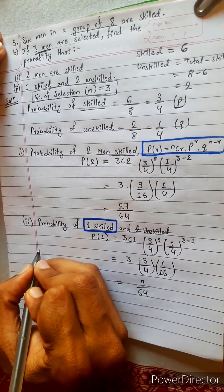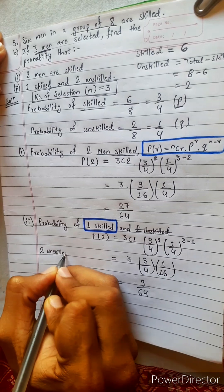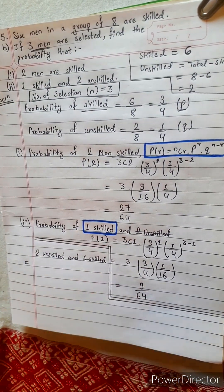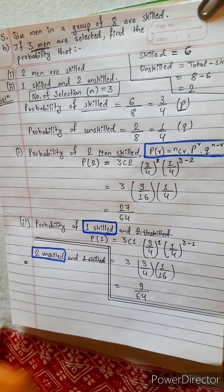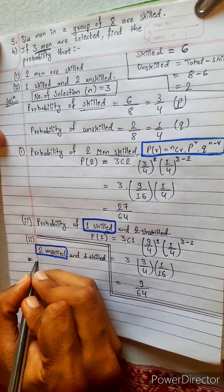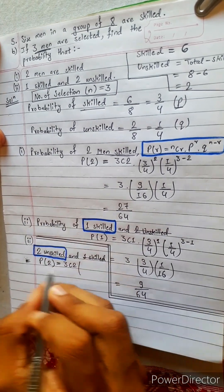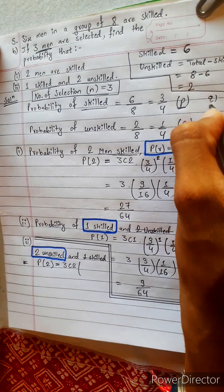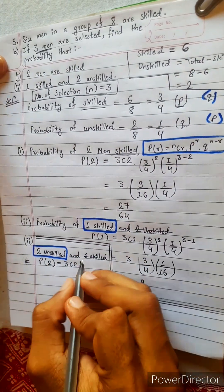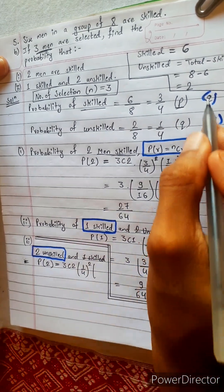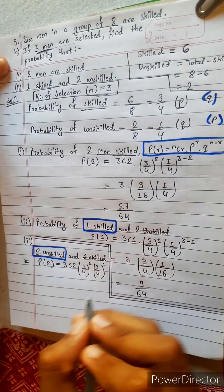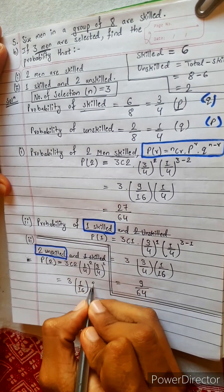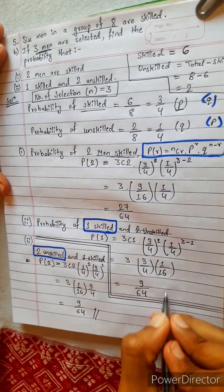Another method: suppose we focus on two unskilled instead. In this next method, we don't focus on skillful — we focus on two unskilled. We will have P2 equals three C2, and now our P becomes one by four, since we are focusing on unskilled. This is our new P, and three by four becomes our new Q. So P equals one by four, R equals two, Q equals three by four, and three minus two is one. Three C2 is three, times one by sixteen, times three by four — that is three times nine equals nine, and sixteen times four equals sixty-four. Nine by sixty-four — same answer.